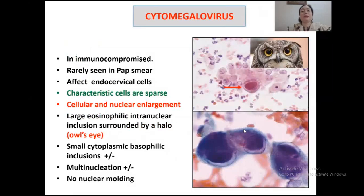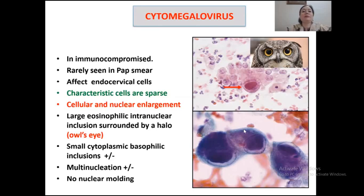One may also see mononucleated infected cells with characteristic nuclear features. The next infection is cytomegalovirus (CMV). Though serological evidence of CMV is common, it is rarely seen in Pap smears, most commonly in immunocompromised individuals, affecting usually endocervical cells, though it can also be seen in stromal cells. The characteristic cells are sparse, showing cellular and nuclear enlargement. A large eosinophilic intranuclear viral inclusion surrounded by a prominent halo gives an 'owl eye' appearance. Small cytoplasmic basophilic inclusions may also be present; multi-nucleation may occur but usually without nuclear molding, unlike HSV.